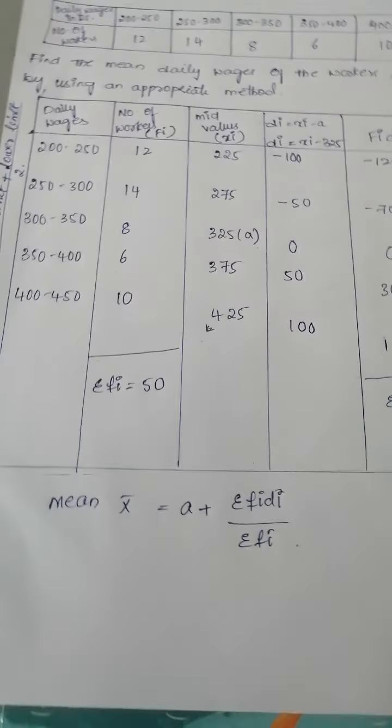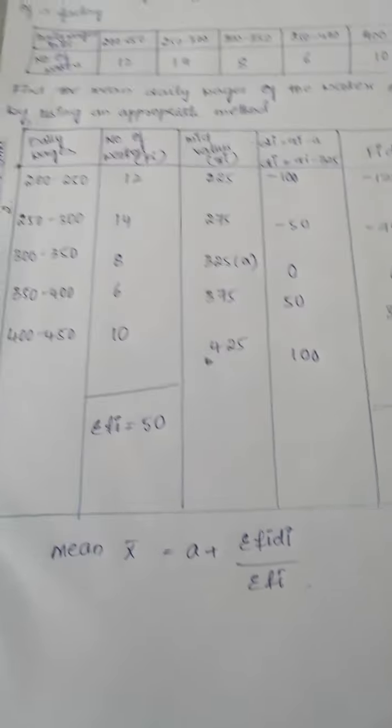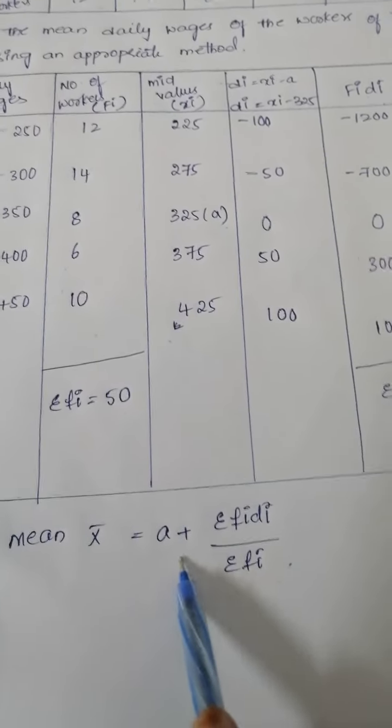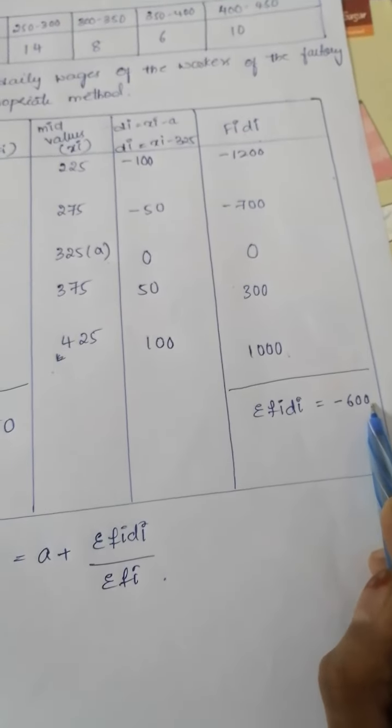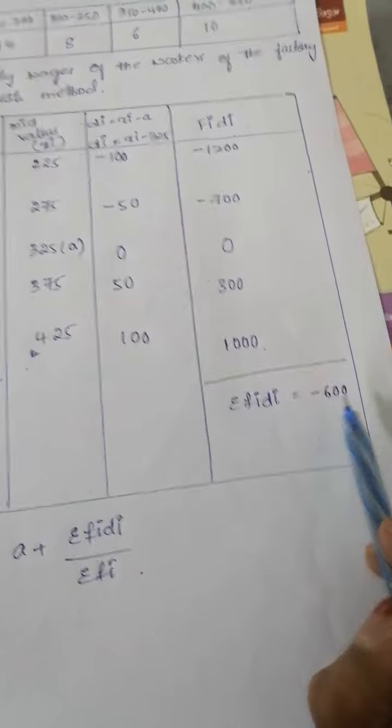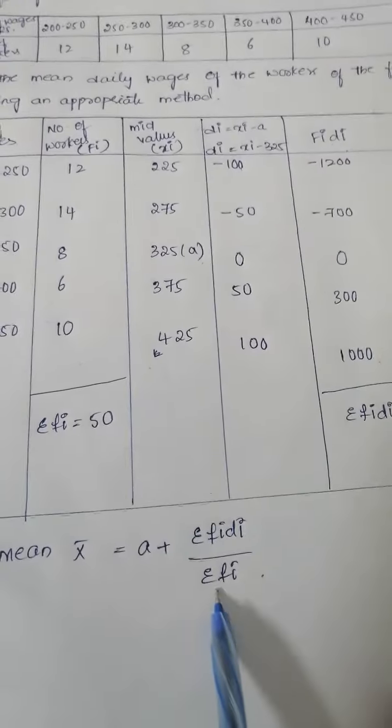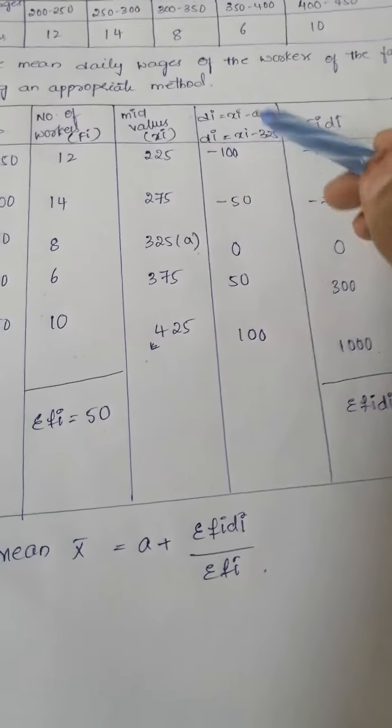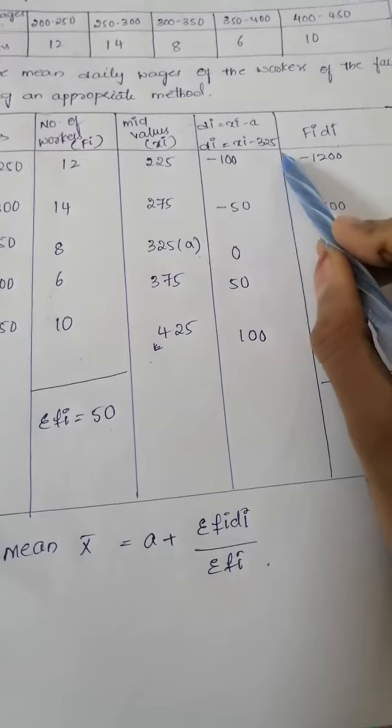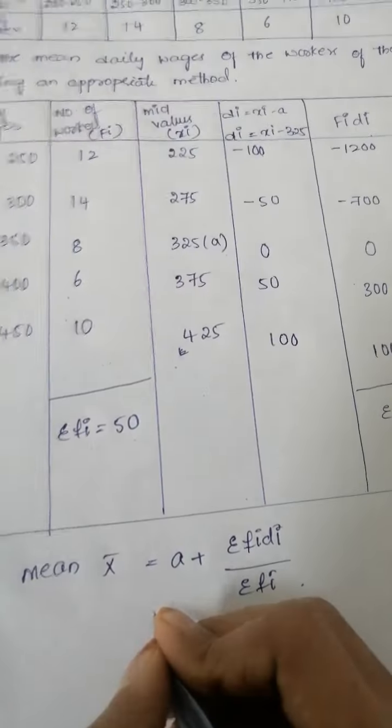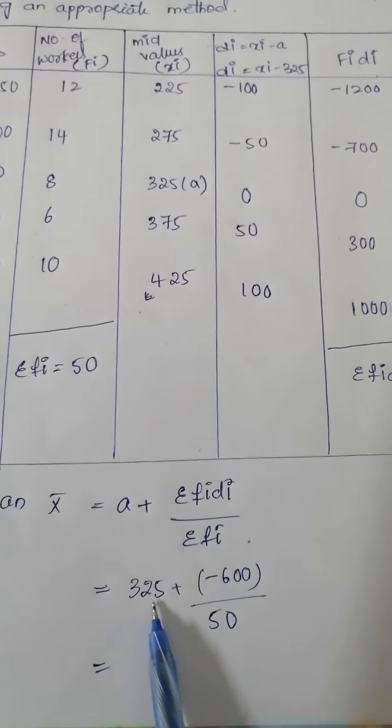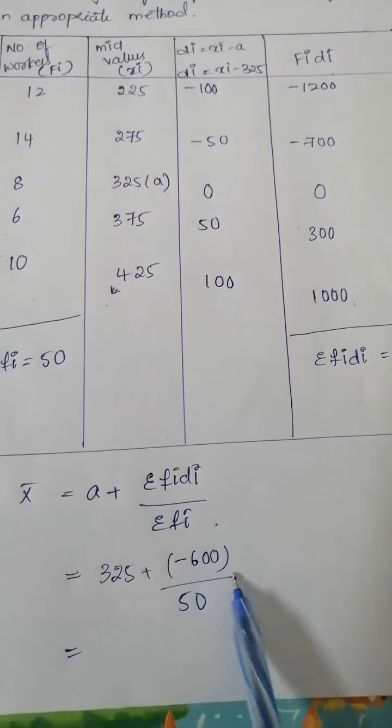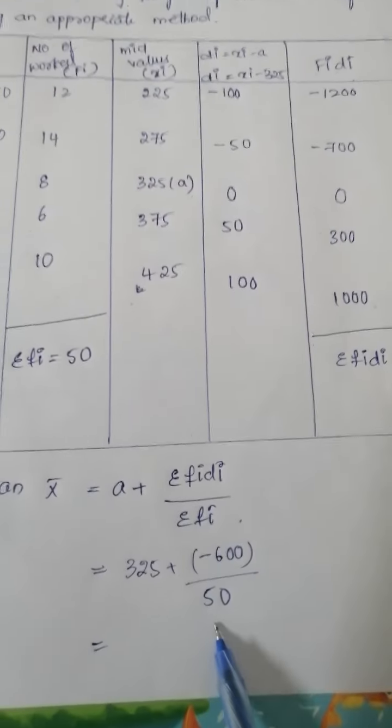Next, coming to our formula. What is our assumed mean formula? A plus summation of Fi di by summation of Fi. Summation of Fi di value already we have found. So we substitute. A value is 325 plus summation of Fi di values minus 600 by summation of Fi value is 50.